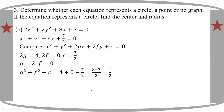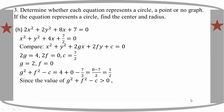We have 8 minus 7, so 1 minus 2. Since the value of G squared plus F squared minus C — G squared minus G, minus G minus F — is minus F, so 0. The value of G minus G is equal to G.